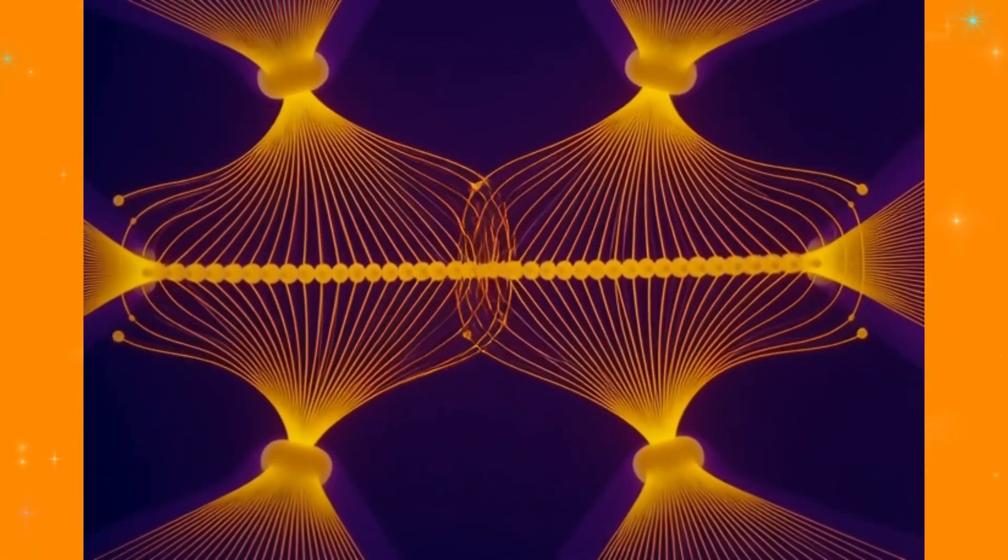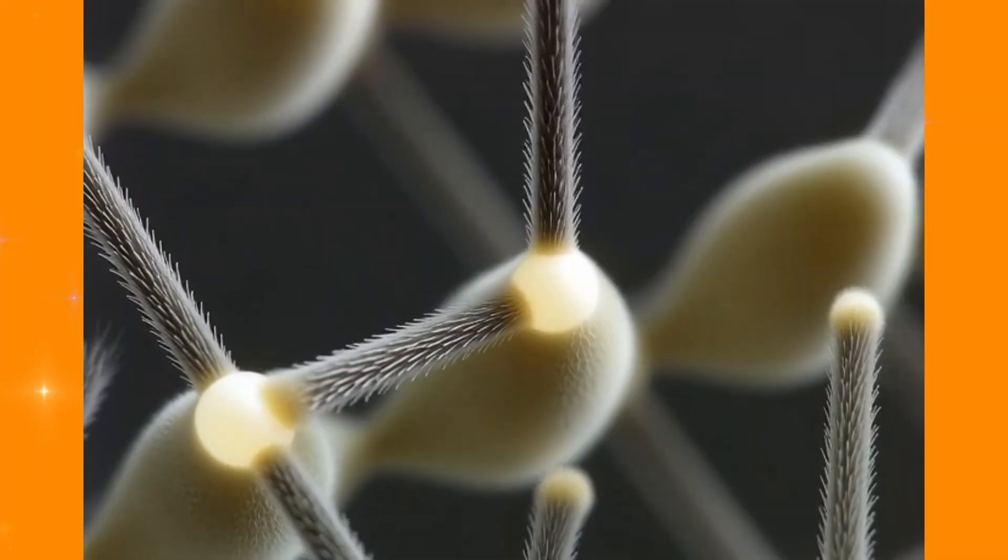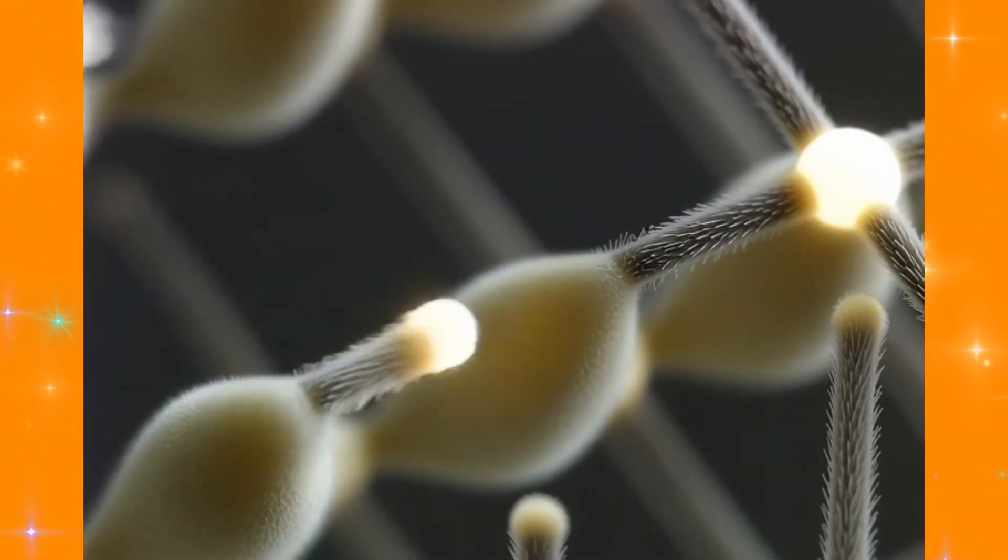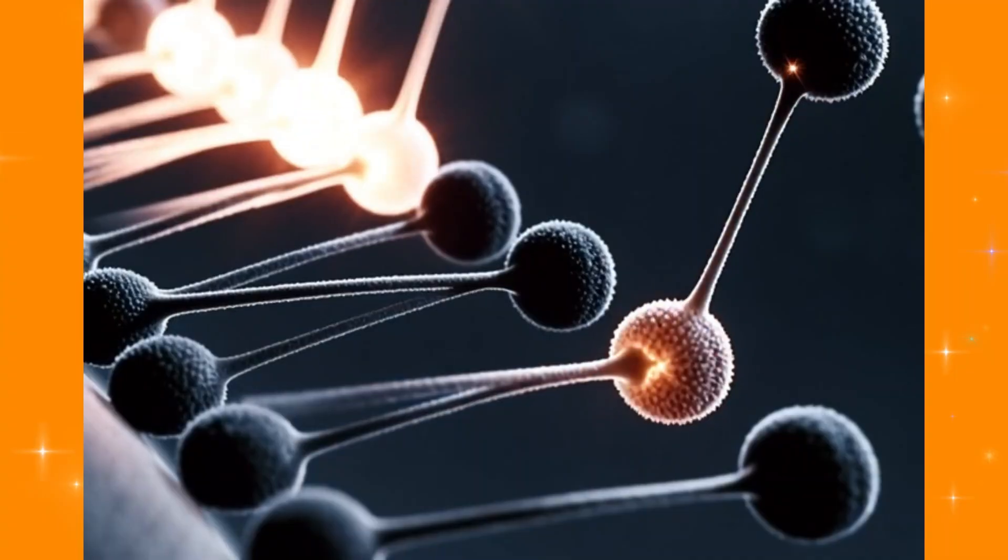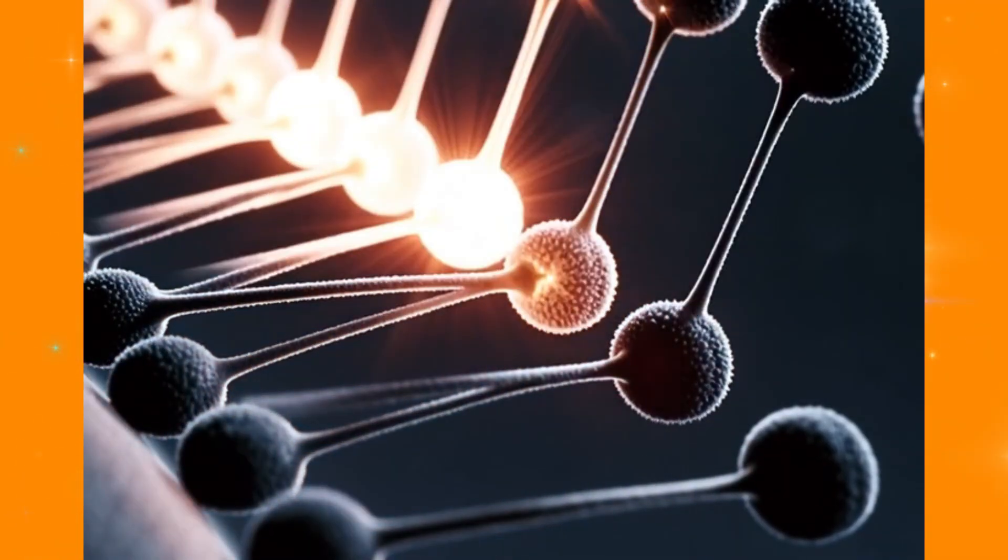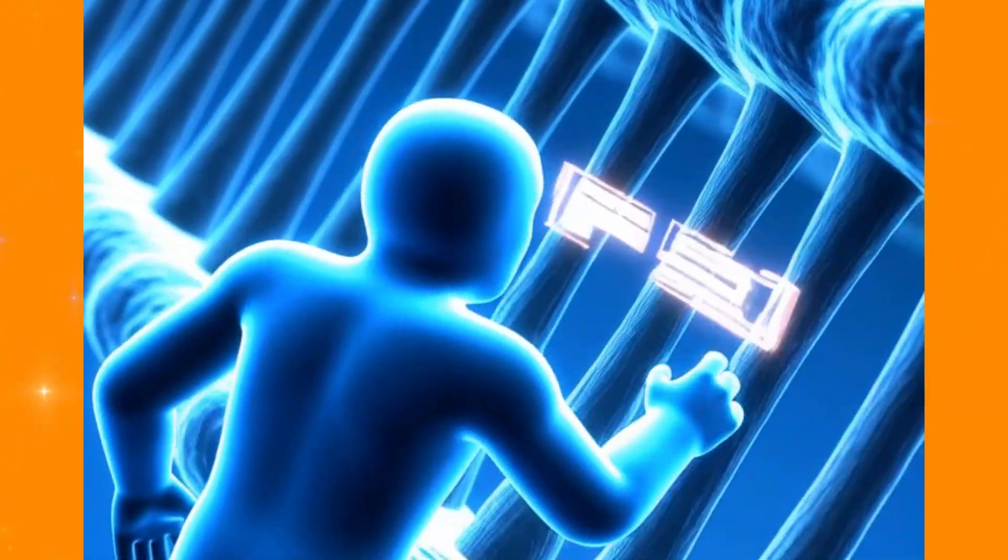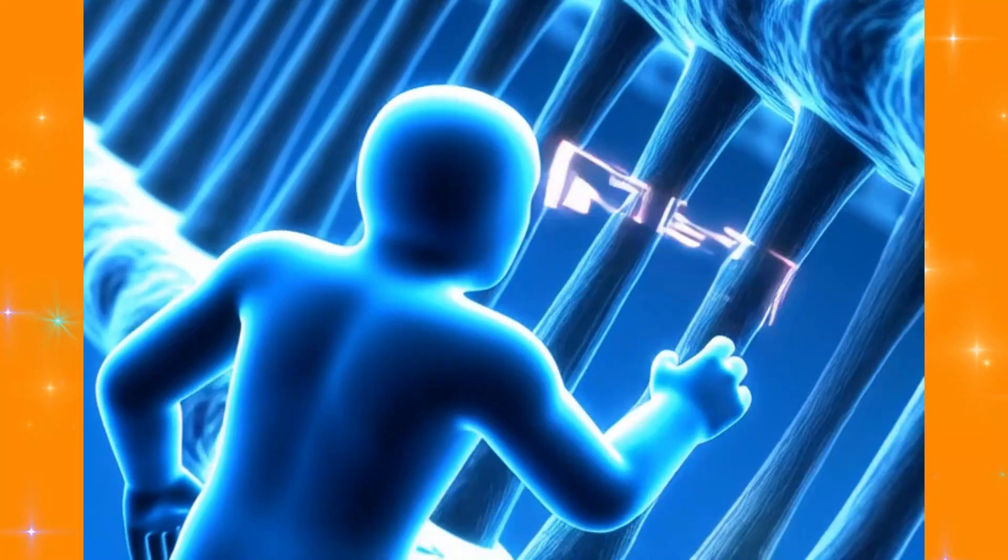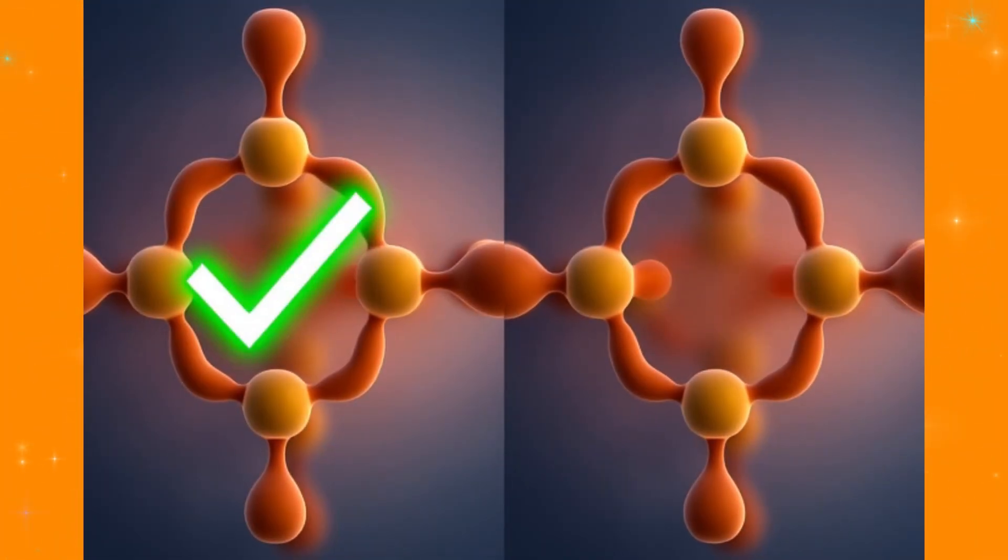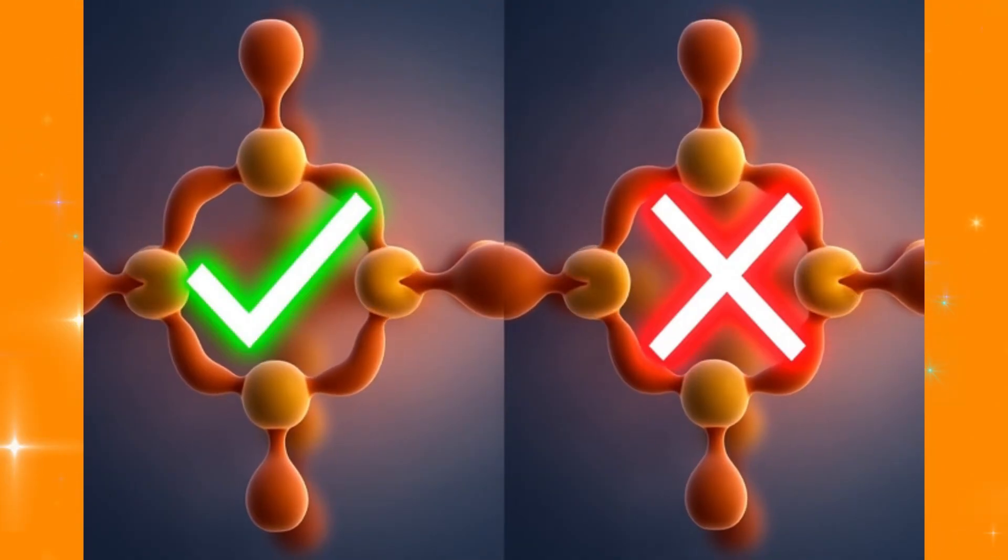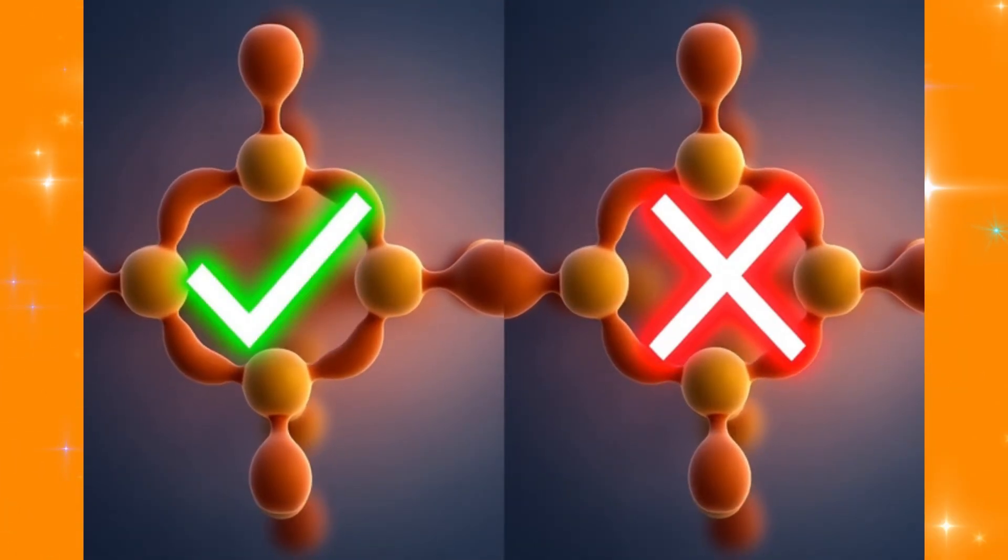The cell runs a security check. Special proteins patrol the entire setup, making sure every single chromosome is attached correctly. If even one connection is wrong, everything stops. The cell will not proceed until it's absolutely perfect. This is your body's built-in cancer prevention system.